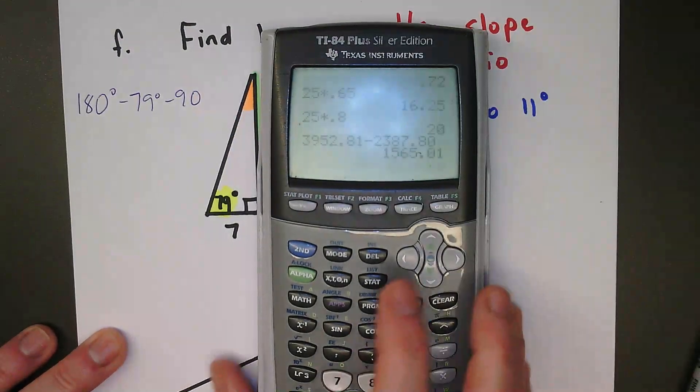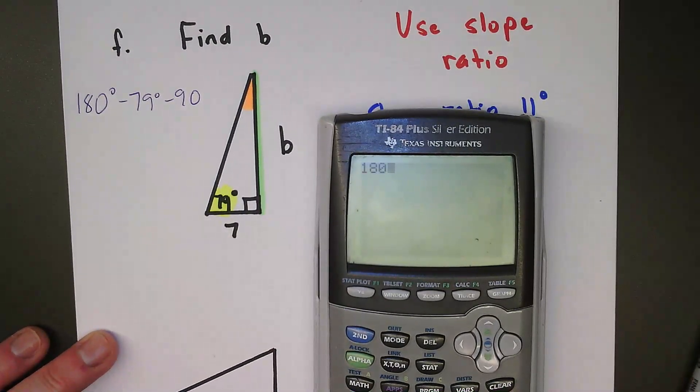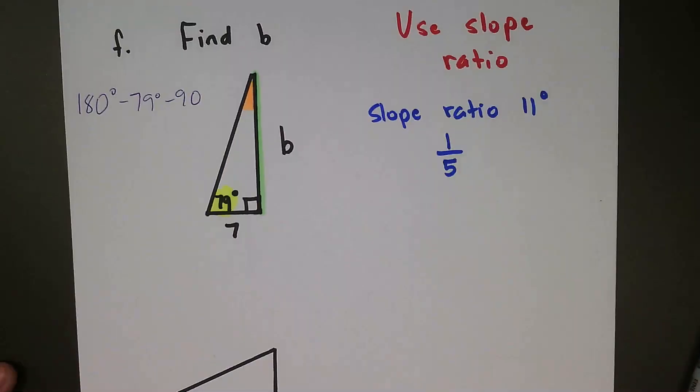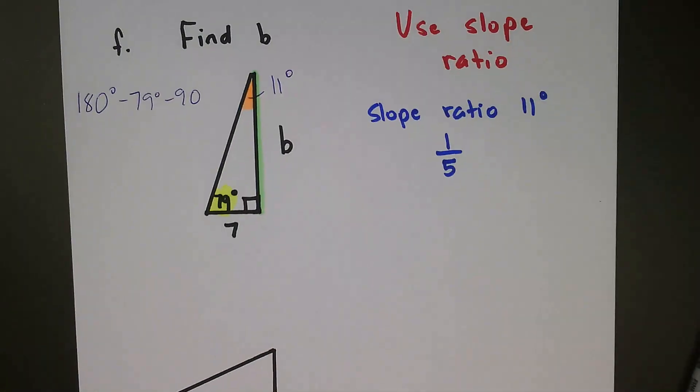And you can certainly do that in your head. You can use a calculator. Here we go. Here we do 180 minus 79 minus 90, and that brings us to 11 degrees, which is very fortunate here because that's the one that we know the slope ratio for. So this is an 11-degree angle.